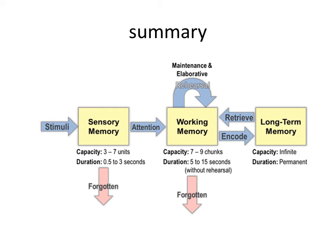Now for a quick summary. This model presents how memory works overall. An individual gathers information through senses from the environment, and it moves towards sensory memory, which has a capacity of 3 to 7 units and a duration of 0.5 to 3 seconds. If not focused or attentive, the material is forgotten and never moves to working memory. Information in short-term memory remains for 5 to 15 seconds without rehearsal and its capacity is 7 to 9 chunks. If not rehearsed, maintained, and elaborated, the information doesn't move to long-term memory and is forgotten or decayed. Information that reaches long-term memory is meaningful and can easily be retrieved — its capacity is infinite and duration is permanent.